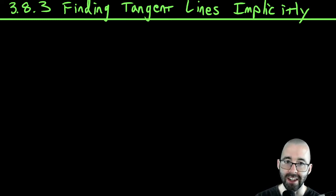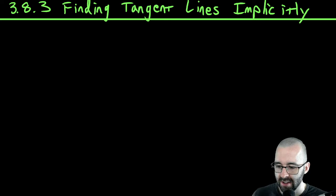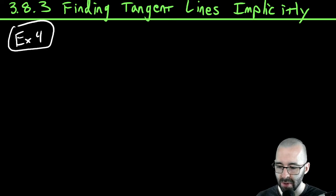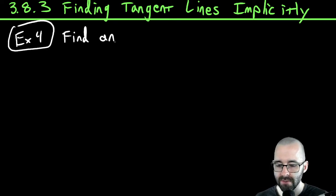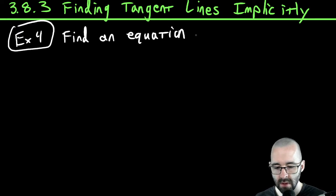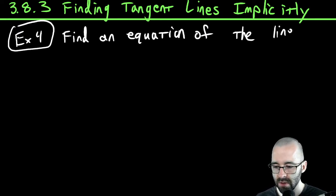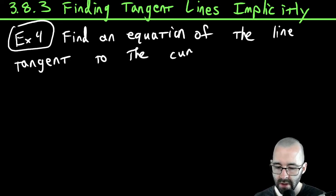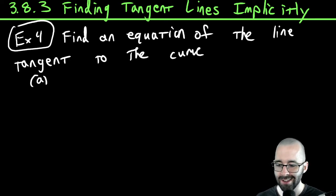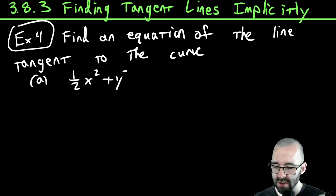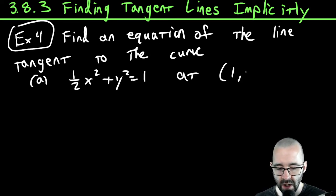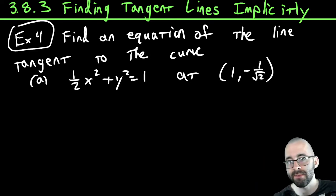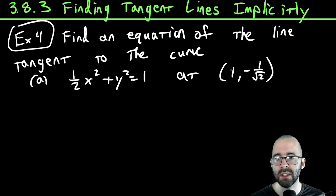All right, it's everyone's favorite time — it's tangent line time. Let's find some equations of tangent lines. Example 4: find an equation of the line tangent to the curve. Part A: the curve is (1/2)x² + y² = 1 at the point (1, -1/√2). This is the equation of an ellipse.